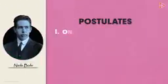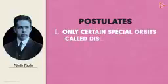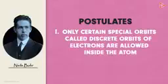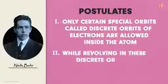Firstly, only certain special orbits called discrete orbits of electrons are allowed inside the atom. Secondly, while revolving in these discrete orbits, the electrons do not radiate energy. Now these points definitely tell us why an atom is so stable.